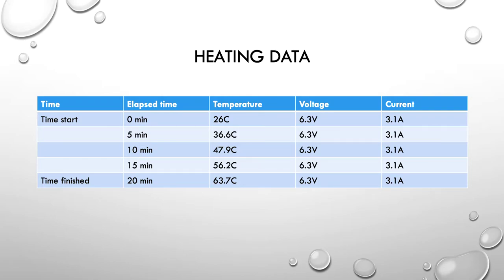So, we put all that data into the table, and you can see here, start time, 0 through to 20 minutes, our five temperature readings, 26 through to 63.7, and our voltage at 6.3, and our current at 3.1 amps.